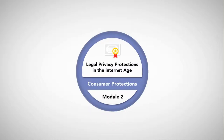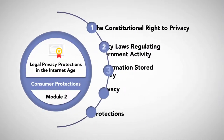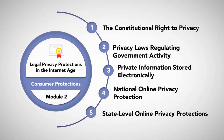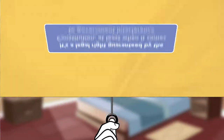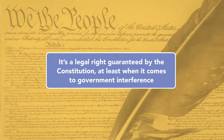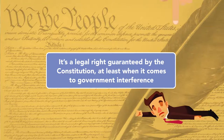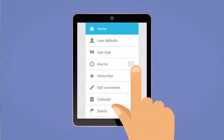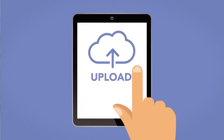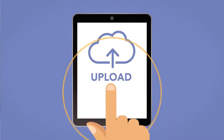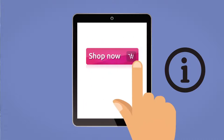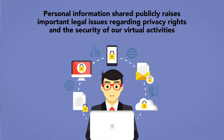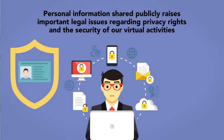Module 2: Legal Privacy Protections in the Internet Age. Privacy is not only a moral prerogative — it's a legal right guaranteed by the Constitution, at least when it comes to government interference. However, in the modern age, technology has evolved to a point where much of our personal information is shared as data. Sometimes we offer this information up voluntarily; other times it's collected from our online activities. Regardless, personal information shared publicly raises important legal issues regarding privacy rights and the security of our virtual activities.